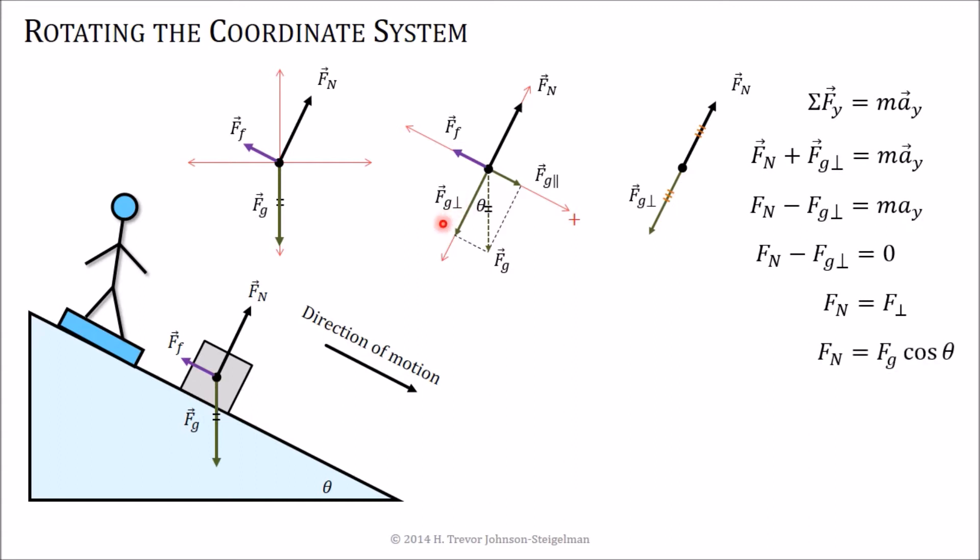But, if you look back to this triangle, this side, the perpendicular side, is adjacent to the angle, so we can write it as Fg cosine theta. Okay?